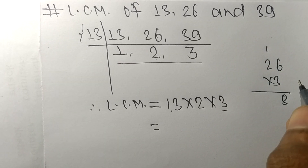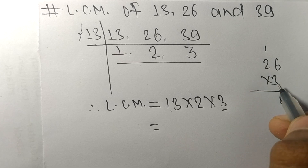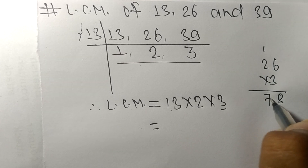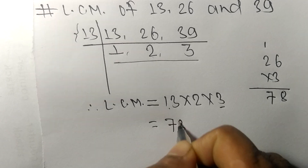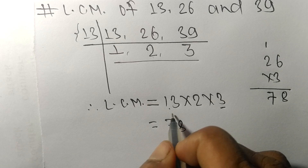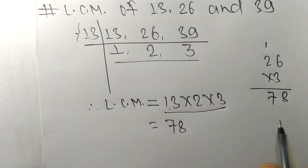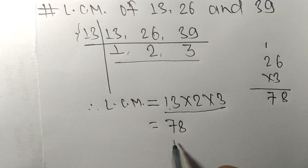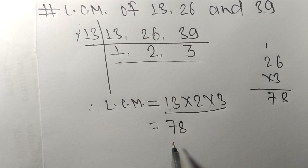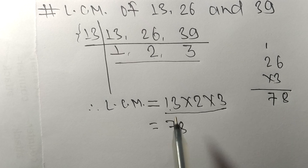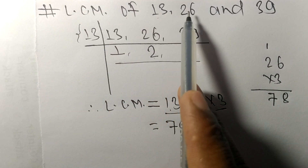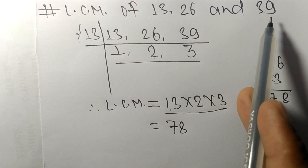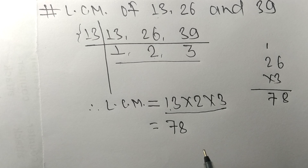Multiplying: 26 times 3 — 6 times 3 is 18, carry 1; 2 times 3 is 6, plus 1 is 7 — gives us 78. So by multiplying all these numbers we get 78, which is the LCM of 13, 26, and 39.